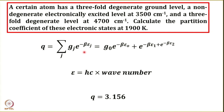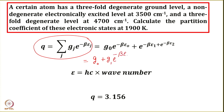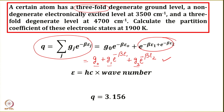There are only three levels which we need to consider. Expanding the expression gives: g₀ + g₁ exp(−βε₁) + g₂ exp(−βε₂). You are given the values of the degeneracy of the ground state, first excited state, and second excited state. The ground state is threefold degenerate, so g₀ = 3. The first excited state is non-degenerate and the next level is threefold degenerate.